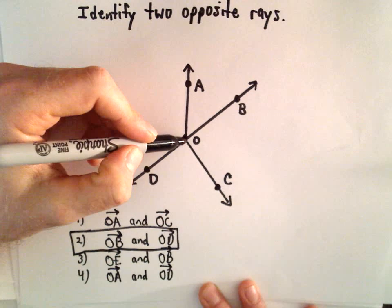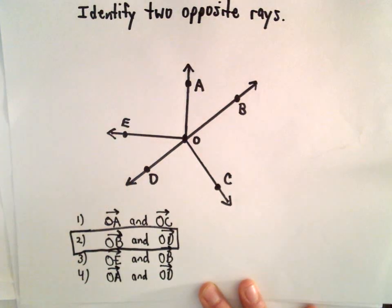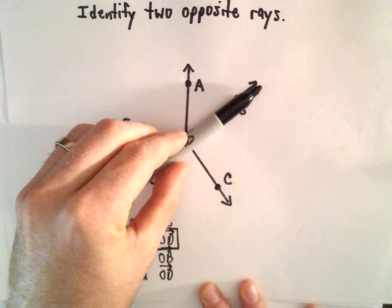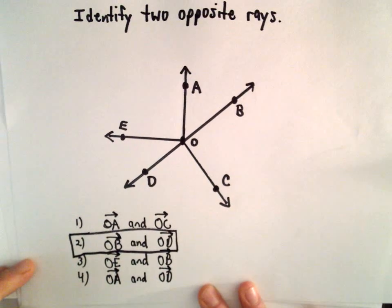And number four, we've got OA and OD. Again, the same idea. Those rays do share a point, but they don't form a straight line. So answer choice number two would make our little straight line here, and that would be the correct choice.